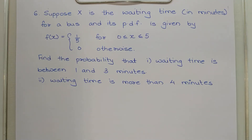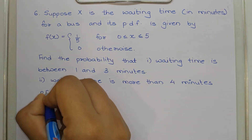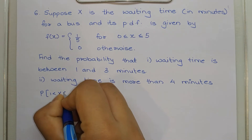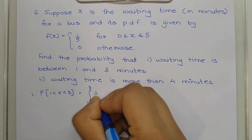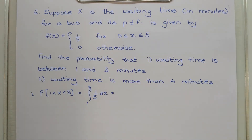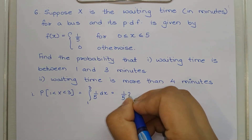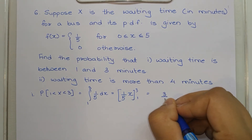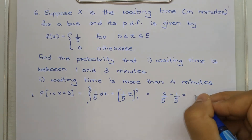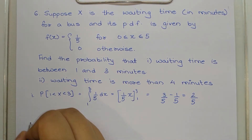In question 6, f(x) = 1/5 for x between 0 and 5, and 0 otherwise. We need to find the probability that waiting time is between 1 and 3. This is P(1 < X < 3) = integral from 1 to 3 of 1/5 dx. Since 1/5 is a constant, integrating gives x/5 evaluated from 1 to 3: 3/5 minus 1/5 = 2/5.